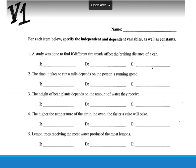Before we get on with this, let me remind you that each one of these is worth a separate point, so number one is worth three points — mark only the ones you get wrong. A study was done to find if different tire treads affect the braking distance of a car. The key word is 'different,' so the IV is tire treads, the DV is braking distance, and a control would be that they ought to be going the same speed at the time they brake.